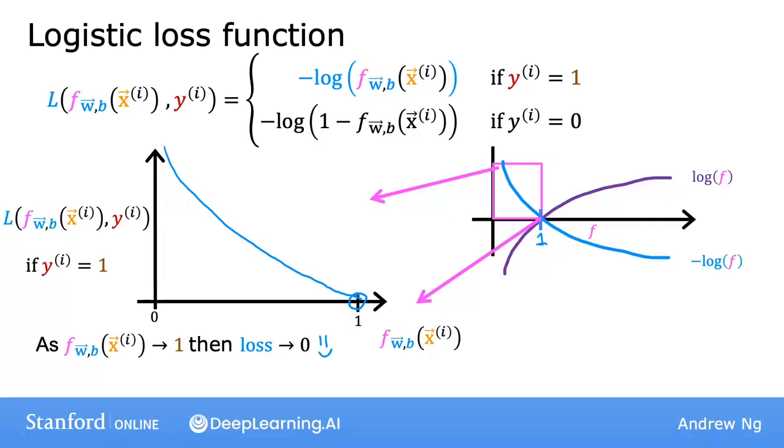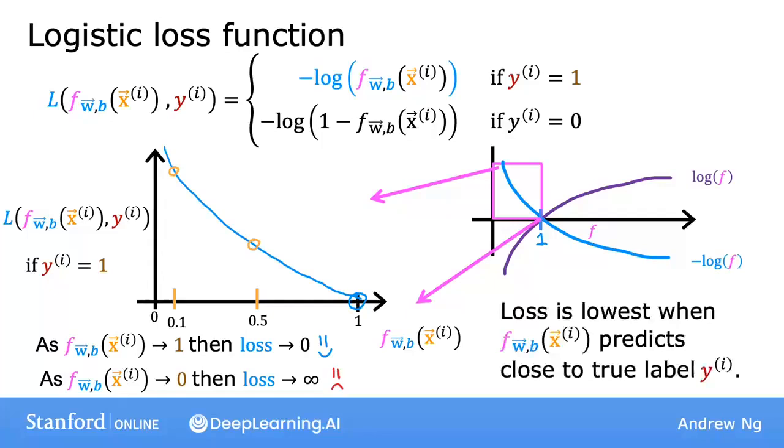Now continuing with the example of the true label y being 1, so say it really is a malignant tumor. If the algorithm predicts 0.5, then the loss is at this point here, which is a bit higher, but not that high. Whereas in contrast, if the algorithm were to have output 0.1, if it thinks that there's only a 10% chance of the tumor being malignant, but y really is 1, it really is malignant, then the loss is this much higher value over here. So when y is equal to 1, the loss function incentivizes, or it nudges, or it helps push the algorithm to make more accurate predictions because the loss is lowest when it predicts values close to 1.